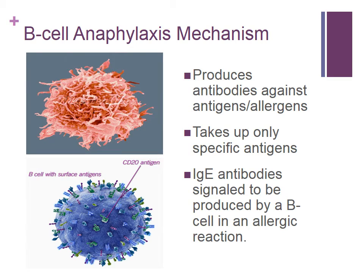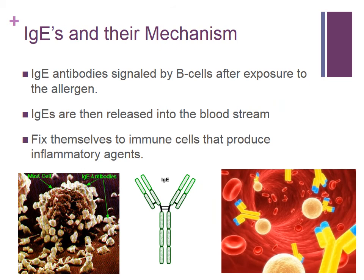One of the leukocytes activated by helper T cells in an anaphylactic reaction are B cells. B cells are antigen-specific cells that take in the allergen and signal for the creation of IgE antibodies. IgE antibodies are created by plasma cells and are the key antibody in anaphylaxis. The image on the bottom left shows the B cell's surface with antigens that are specific to a certain class of antibodies. IgE antibodies signaled by B cells are then released into the bloodstream, where they attach to various cells containing inflammatory agents. This is where the antigens attach to these antibodies and trigger the immediate hypersensitivity response known as anaphylaxis.